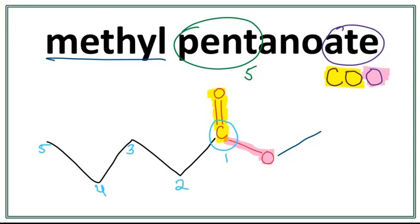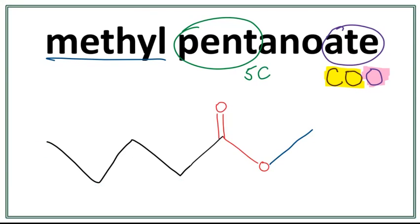Since we're drawing a line structure, we don't need to draw this carbon here. So we're going to get rid of the numbers and this carbon. This is the structure for methyl pentanoate. The side chain, which is from the alcohol, always attaches with the oxygen. The parent chain, which is from the carboxylic acid, always attaches with the carbon in the functional group.